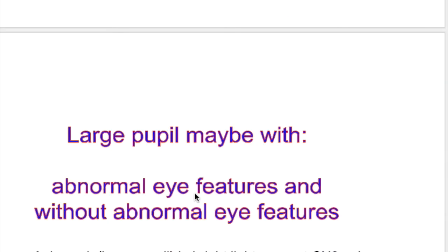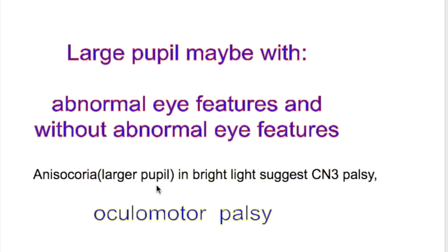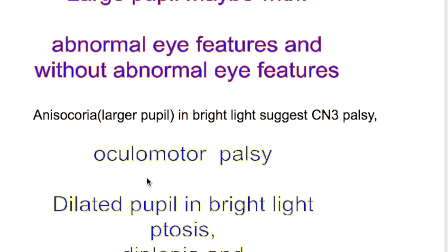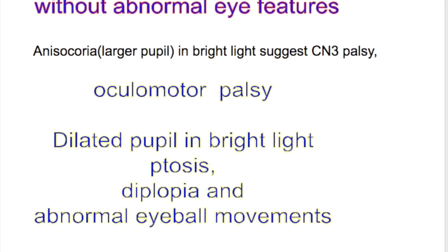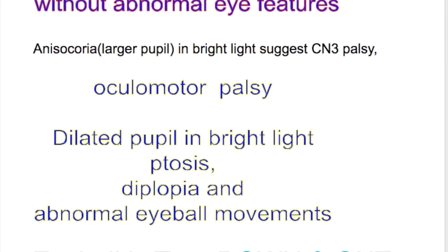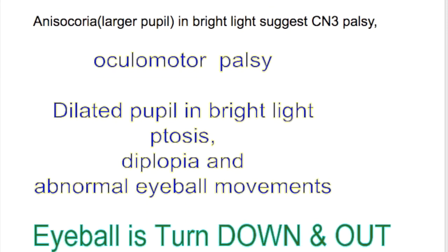A large pupil may be accompanied by abnormal eye features, or without abnormal eye features. A large pupil in bright light with abnormal eye features suggests third nerve palsy, or oculomotor palsy. The features of oculomotor palsy include a dilated pupil in bright light, ptosis, diplopia, and abnormal eye movement.